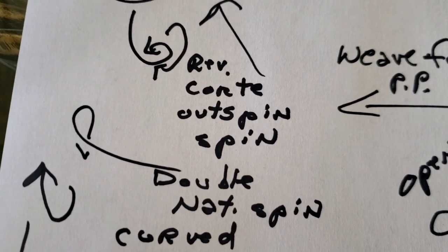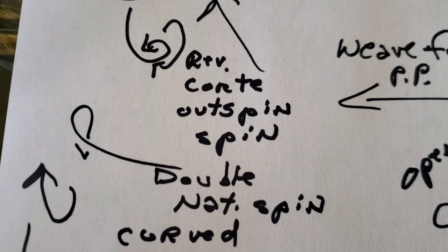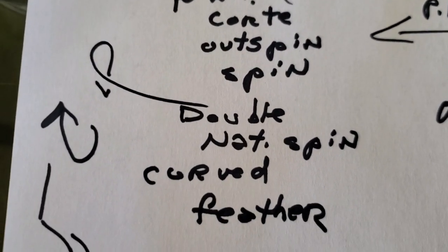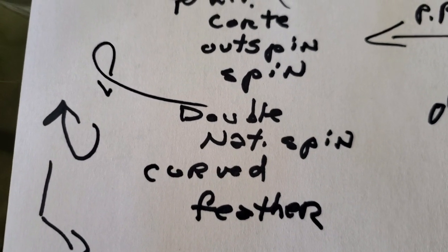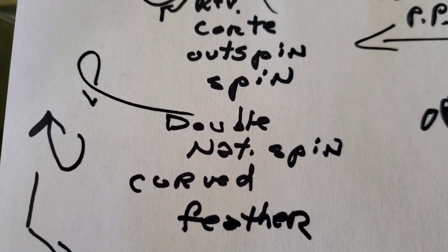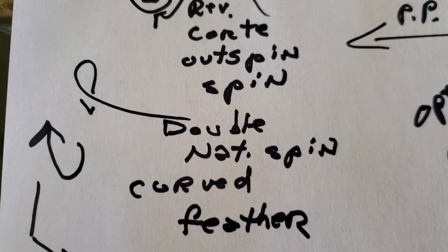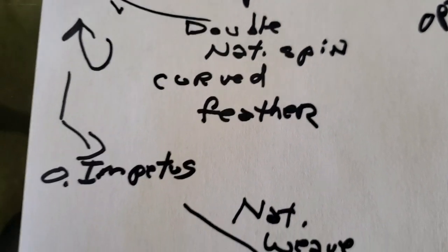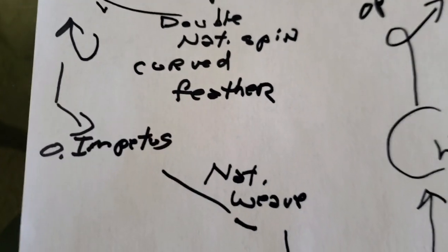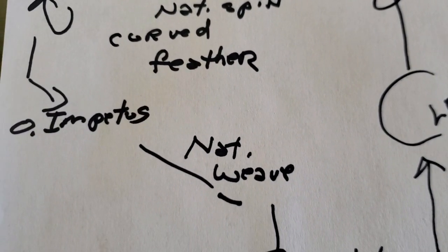And then when you finish the spin, instead of the natural turn which is what we've been practicing, that's where we'll put your double natural spin. Then we'll dance a curved feather. This curved feather comes from outside partner—the double natural spin ends with the man going outside partner on his right foot. From there we'll dance an open impetus turn.